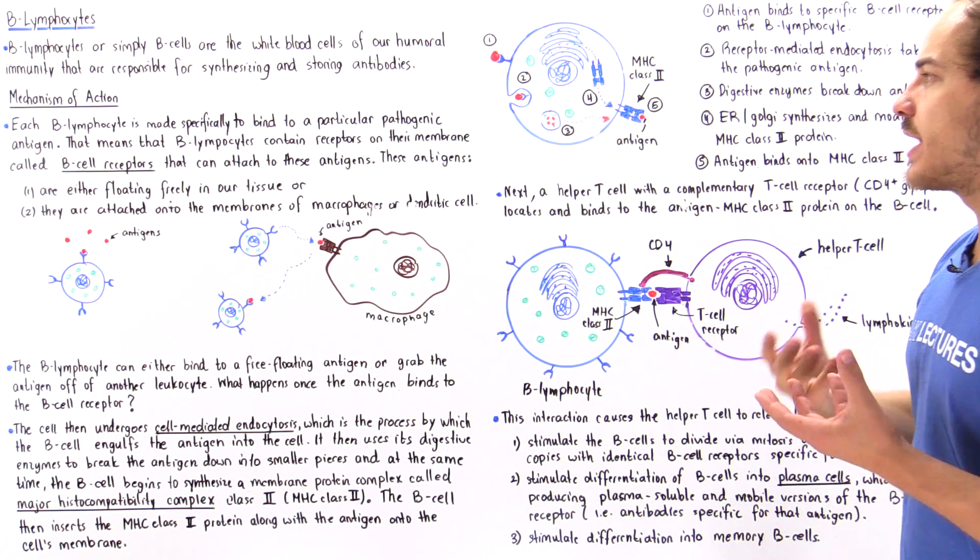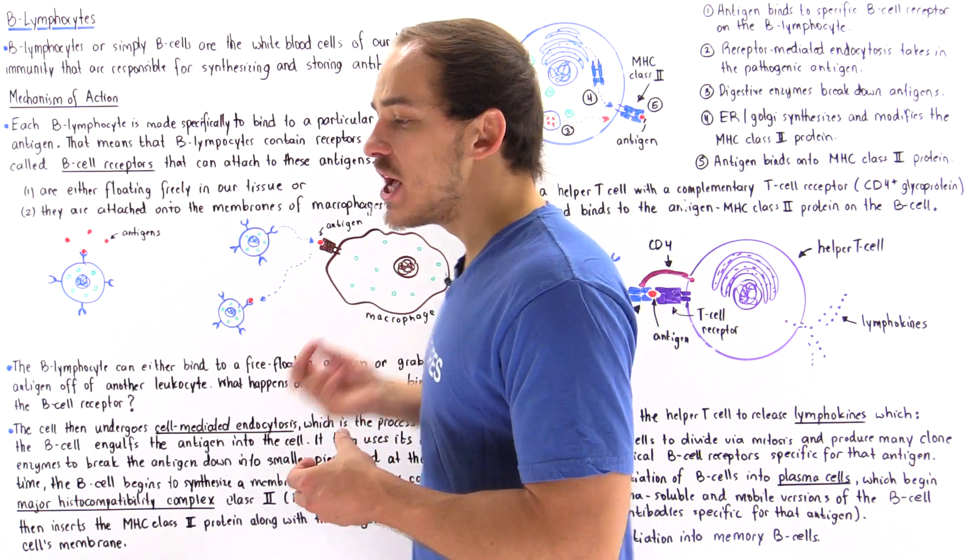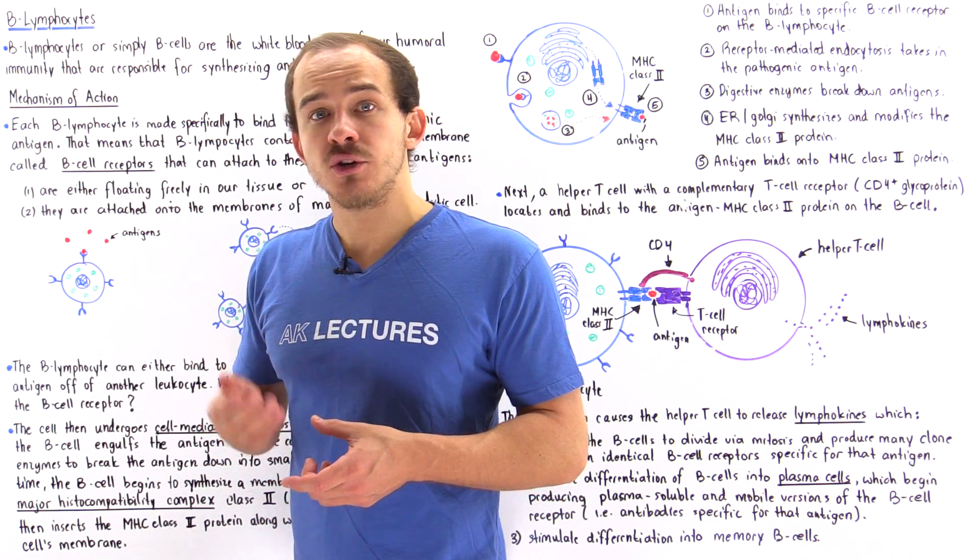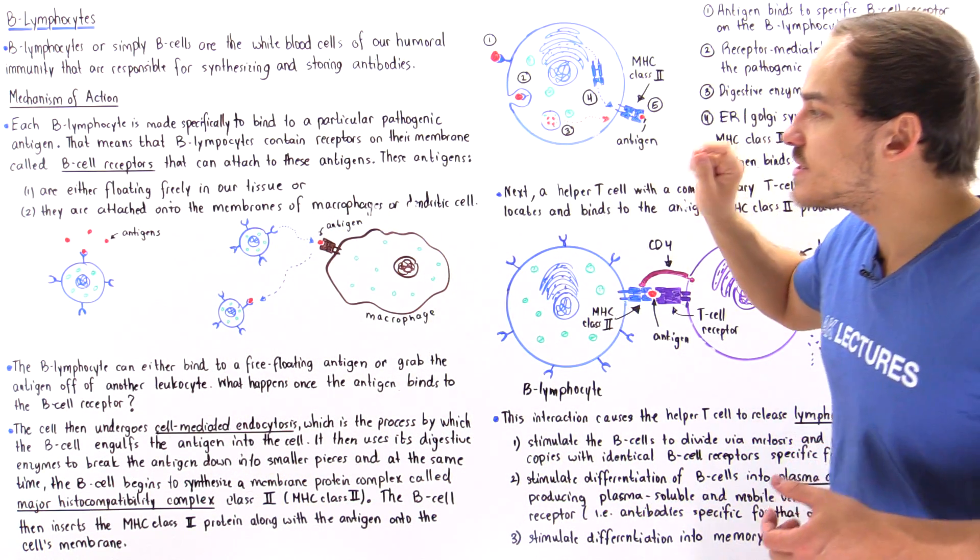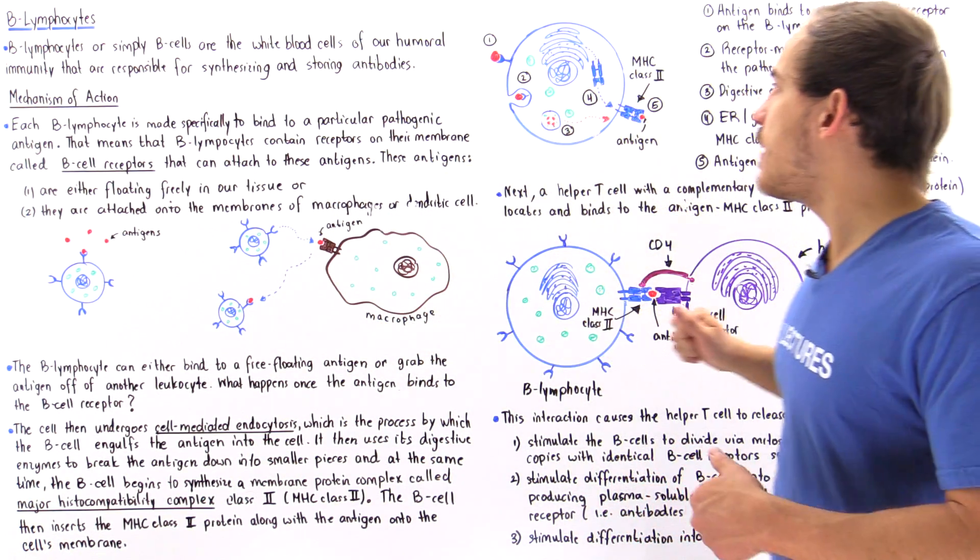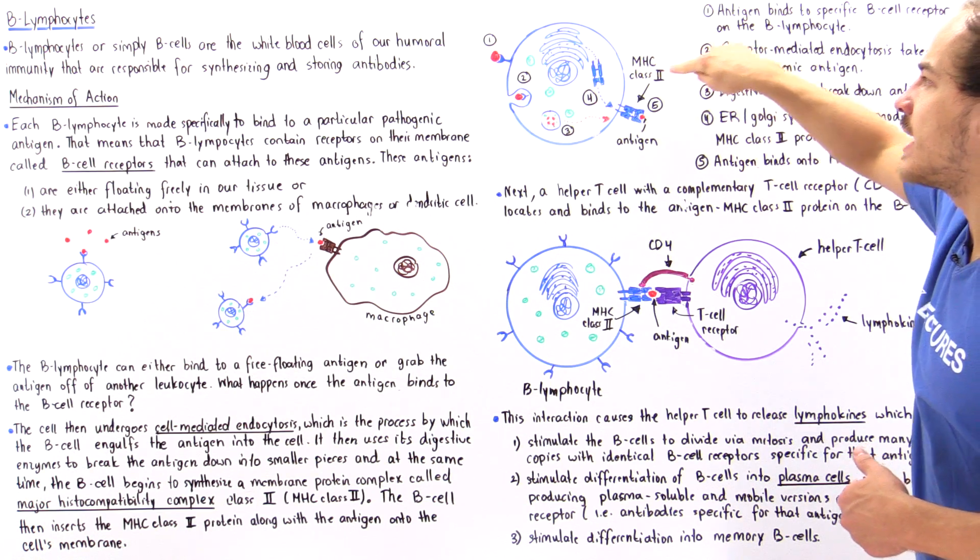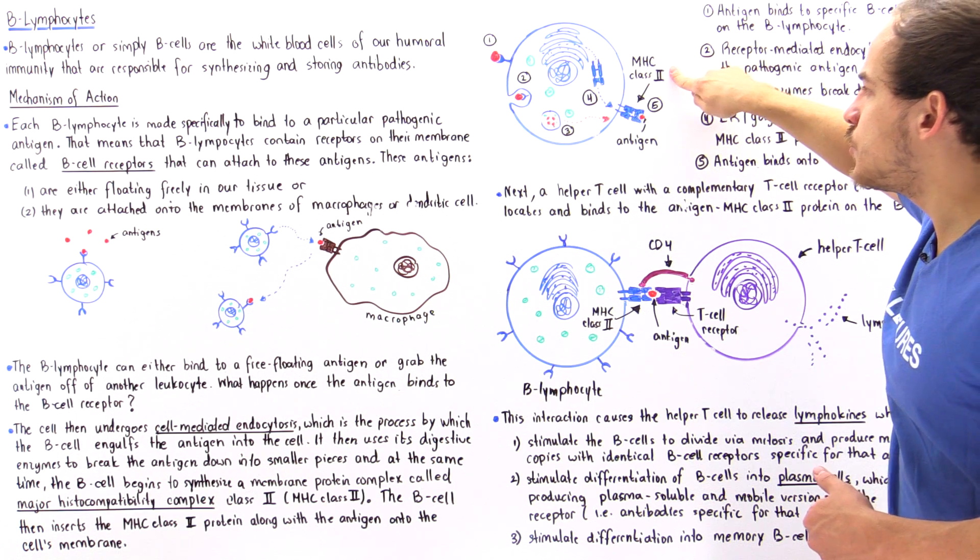The antigen breaks down, and a small portion known as the antigenic determinant or epitope is placed on the same type of protein complex found on the macrophage: the MHC class 2, or major histocompatibility complex class 2.